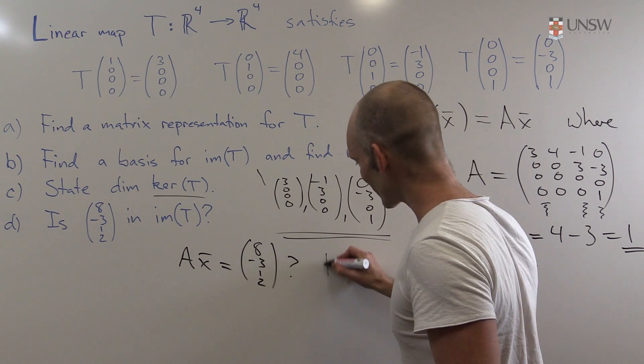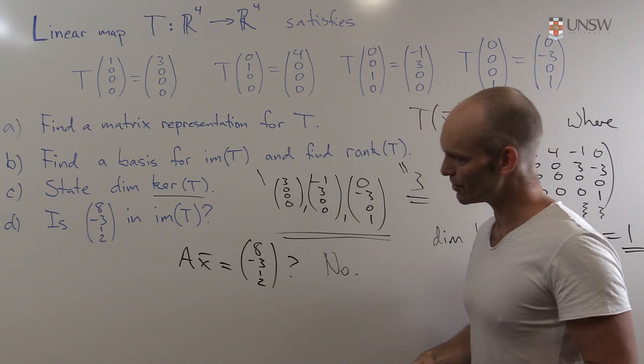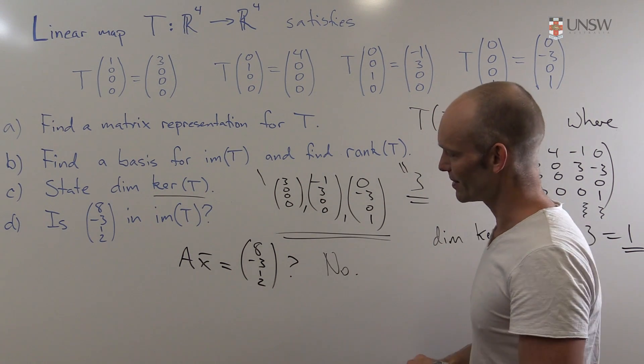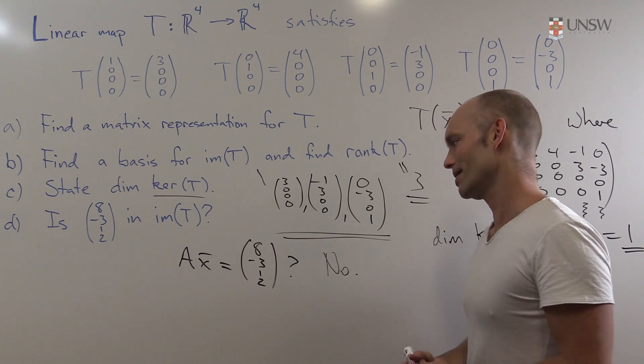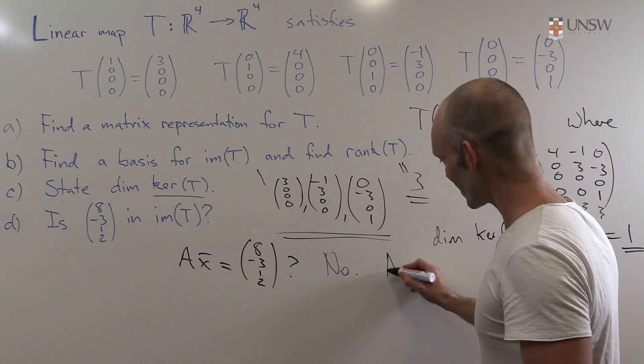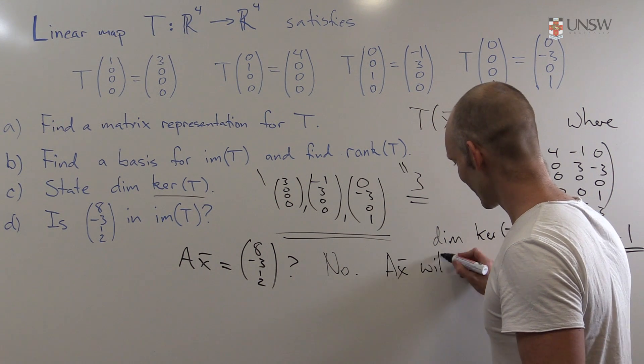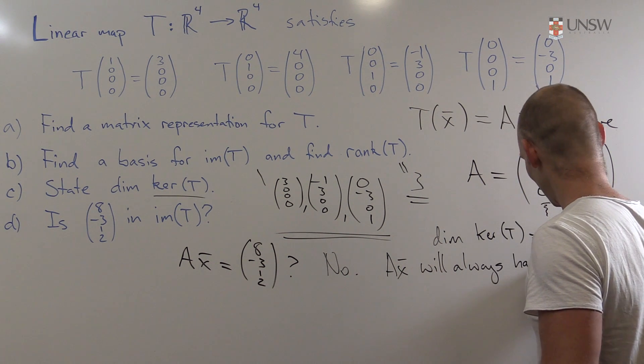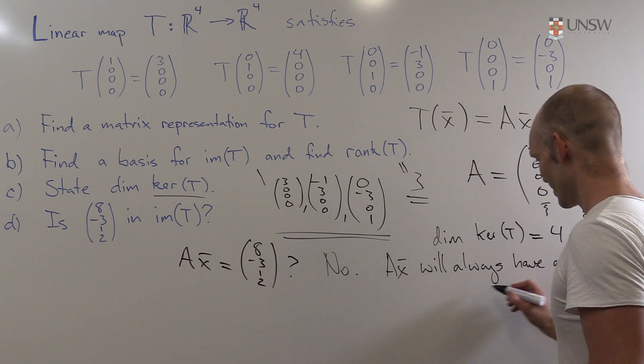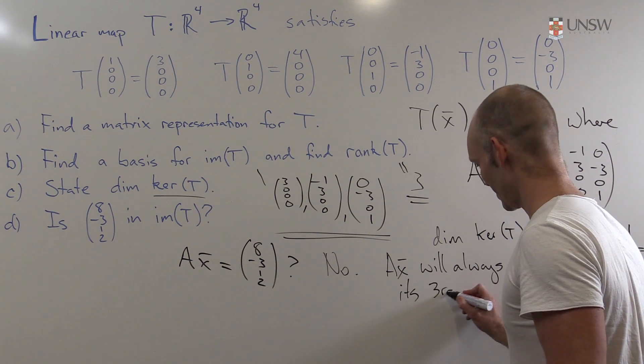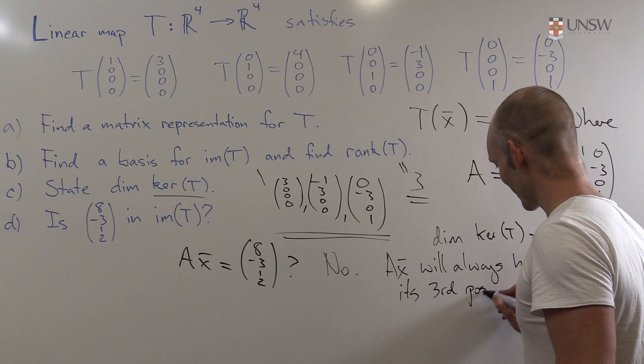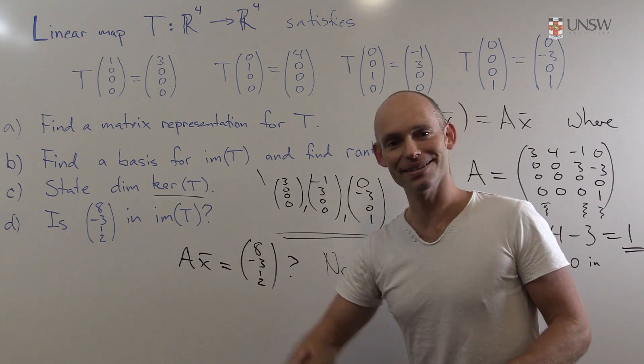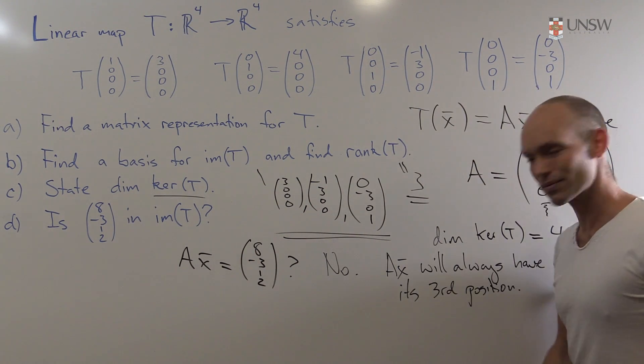So we can confidently write no. So we should also give an explanation. And that's probably the hardest bit about this little sub-question. What to write. The idea is clear, but how to express it. And we can say, well, the vector Ax will always have a 0 in its third position. Full stop actually, because then it goes without saying that, well, that's not going to be that vector over there. And we are done.